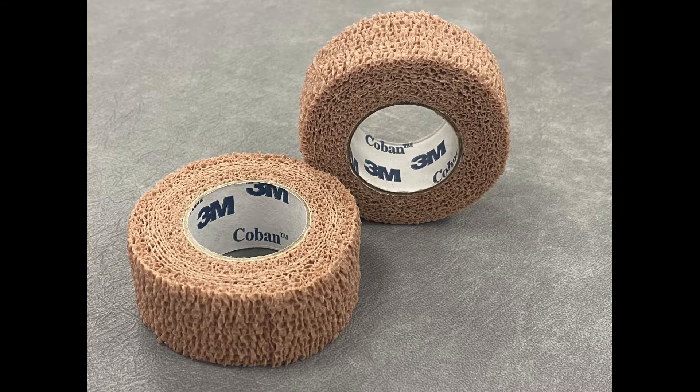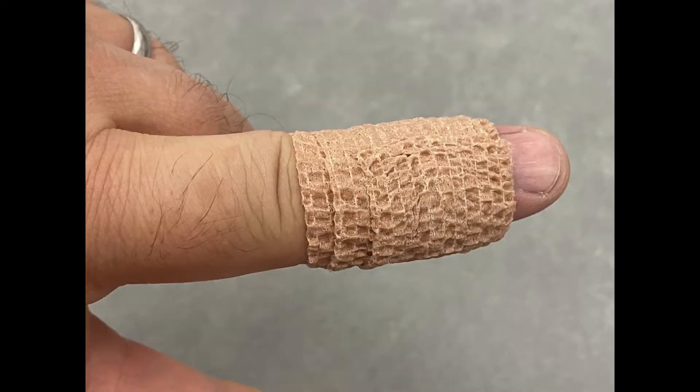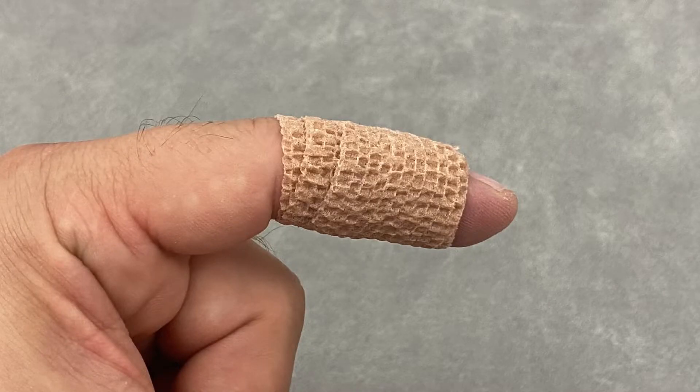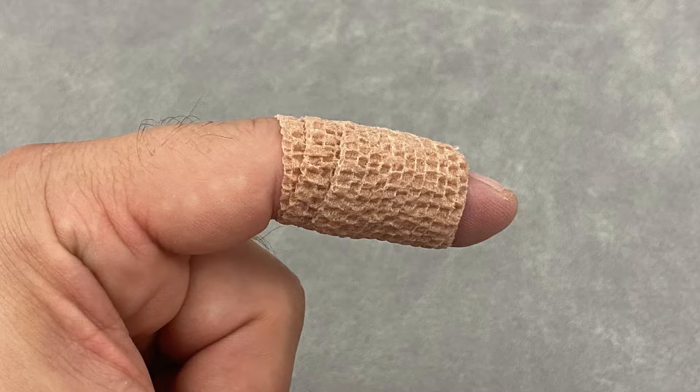Coban is an elasticated latex tape which can be used to help support arthritic finger joints. To learn more about nodal hand and finger arthritis and some of the other self-help treatments, please see my in-depth video which I'll put a link to at the top of the screen or check out the video description below.